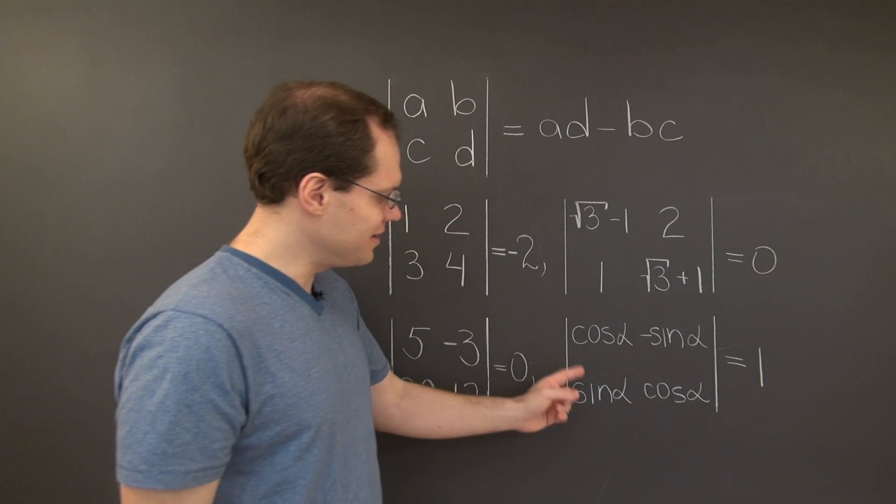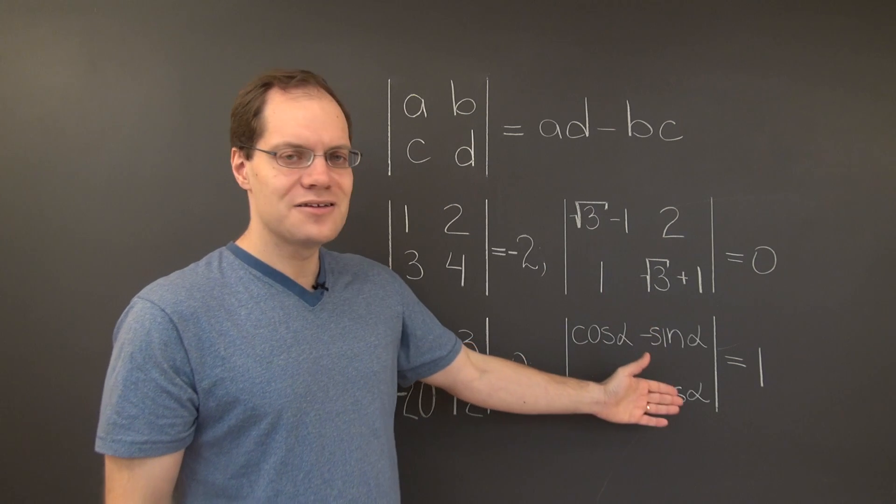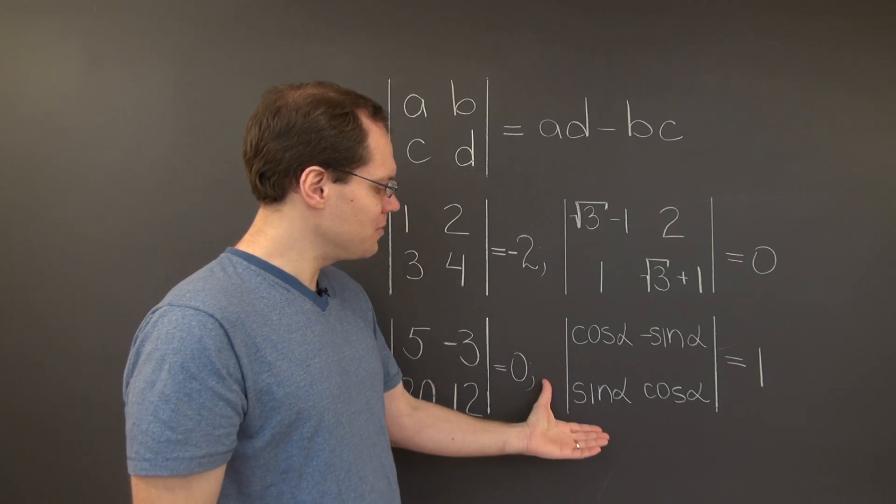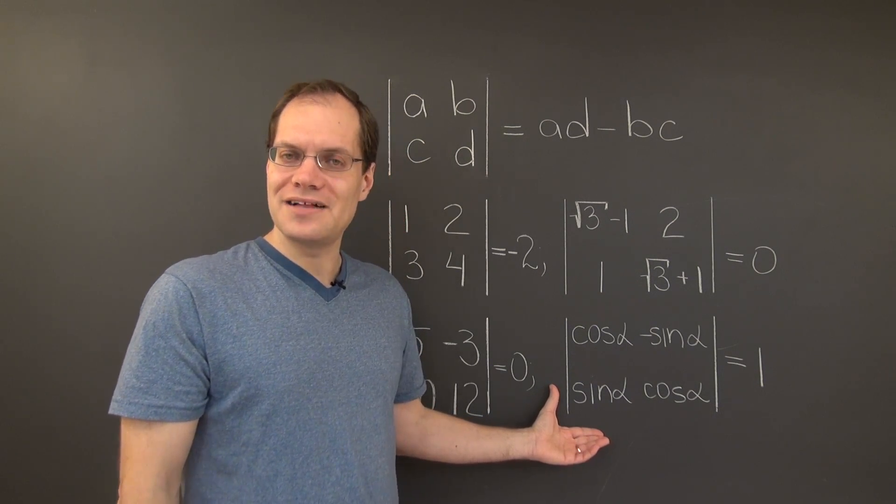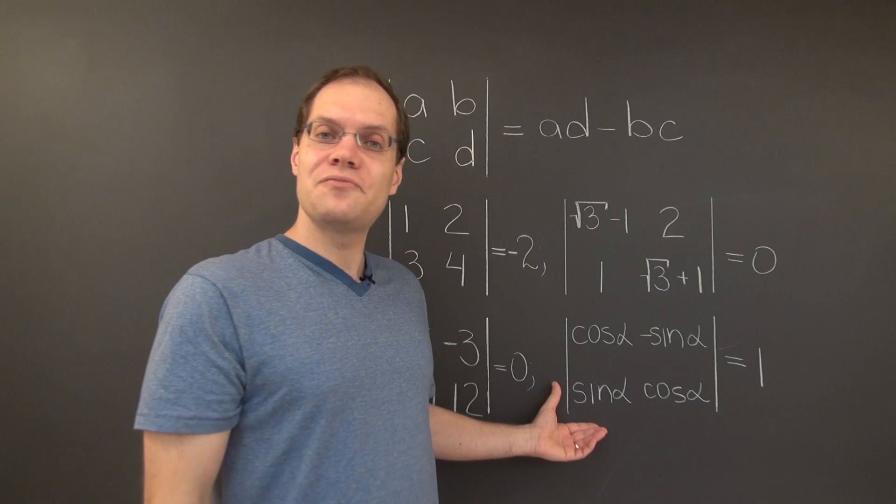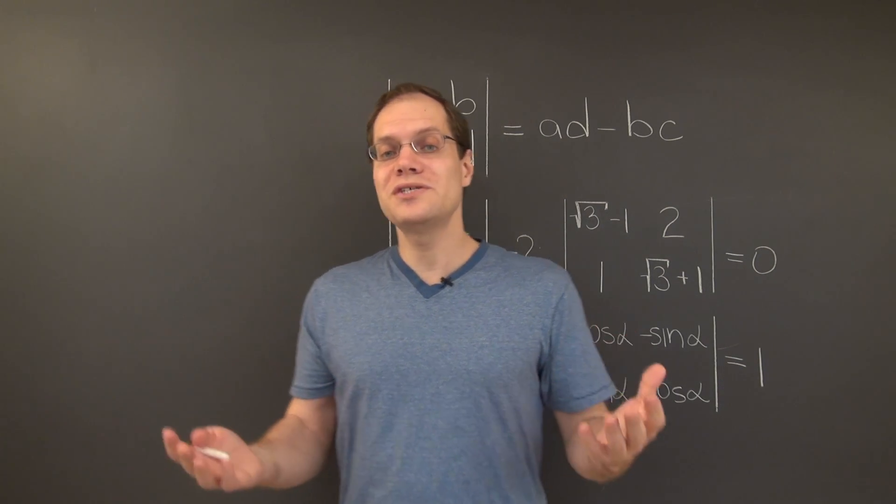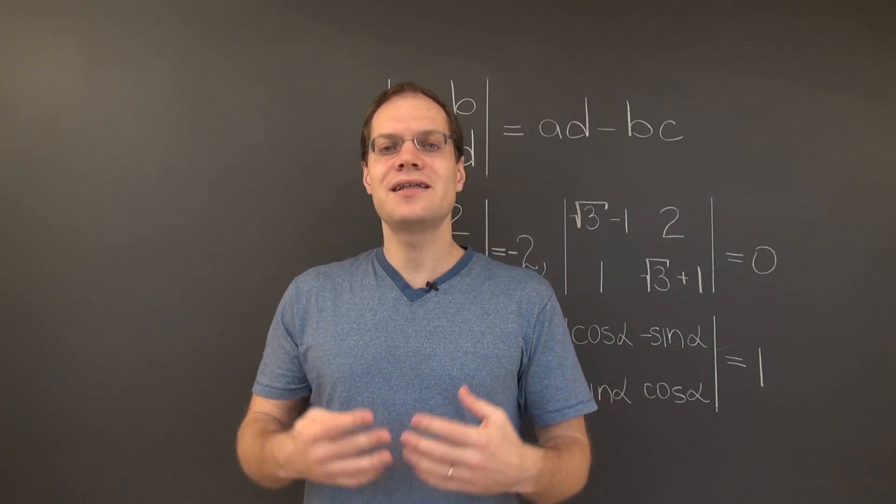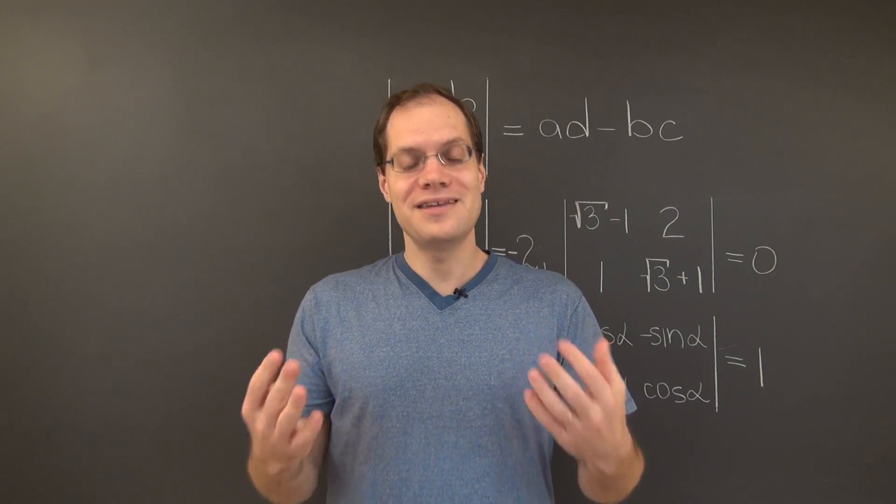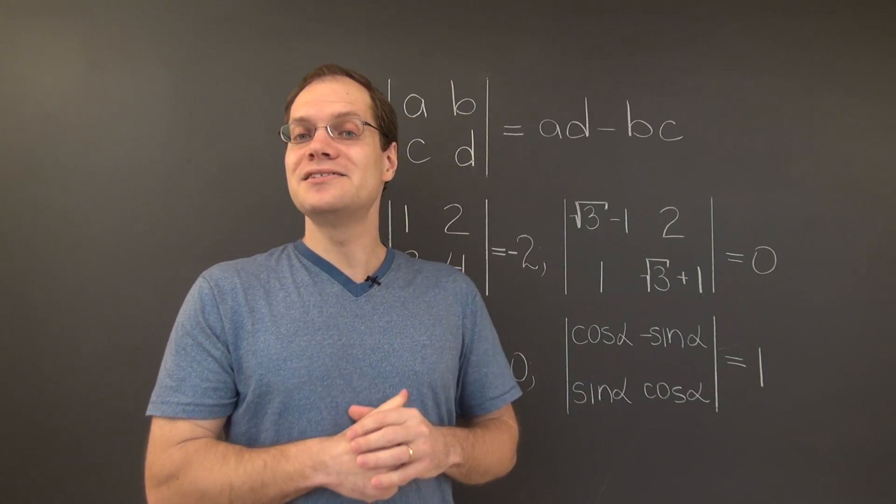In this case, the determinant tells us that for any value of alpha, these columns are linearly independent, no matter what the value of alpha is. Very interesting. A question that would not have been easy to answer without using determinants. What we see from these examples is that determinants, even for 2x2 matrices, are quite useful. They also show that calculating determinants for 2x2 matrices is very simple.